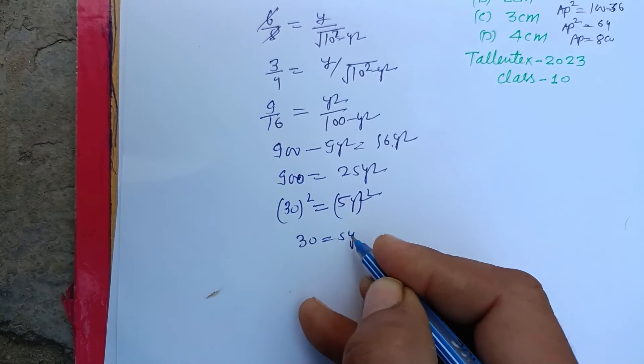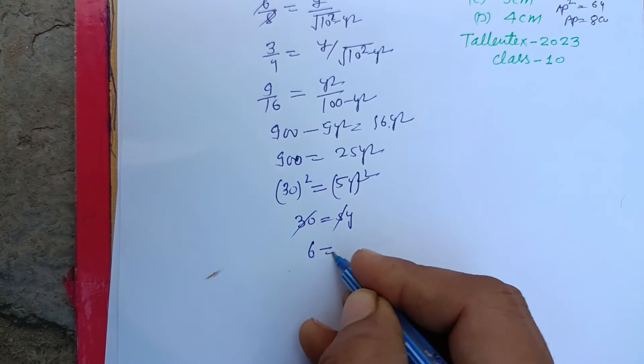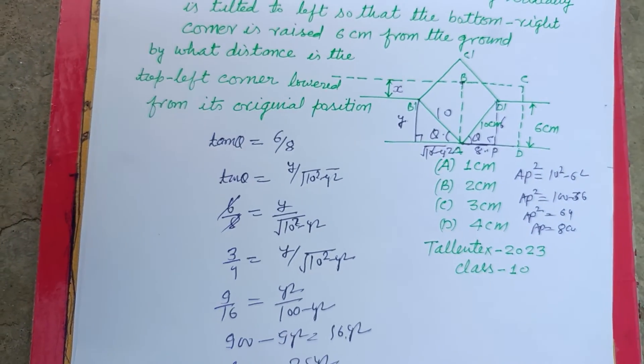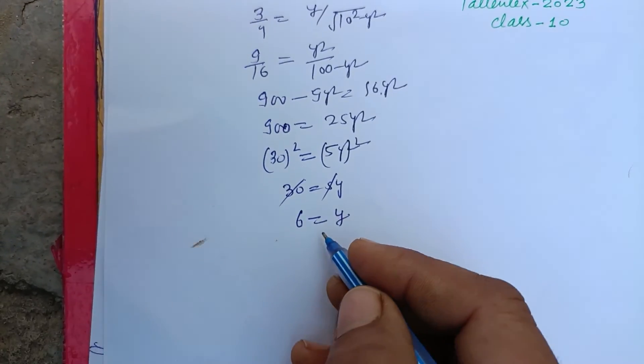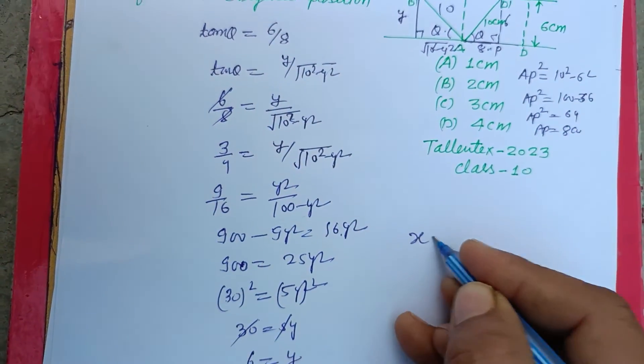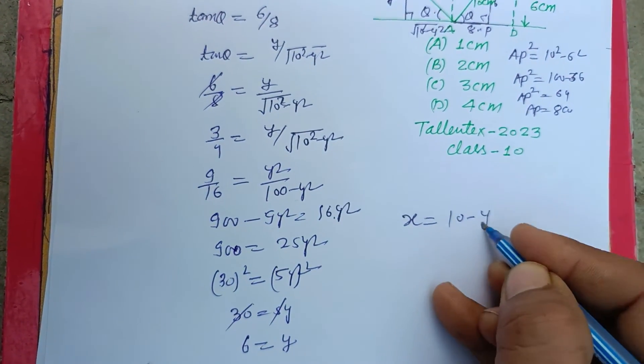So 30 equals 5Y, so Y equals 6. Distance X equals 10 minus Y, so 10 minus 6, this is 4 centimeter.